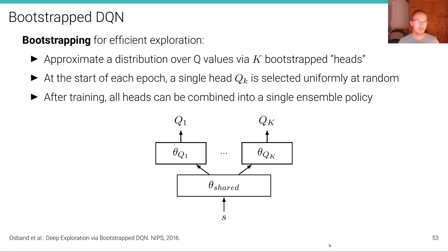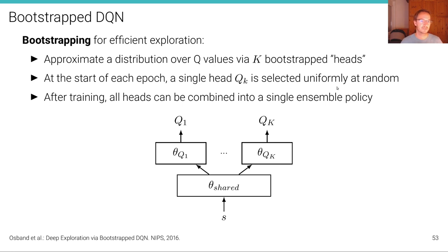Another technique is Bootstrapped DQN, used for efficient exploration. The idea is to approximate a distribution over Q-values via K bootstrapped heads — a network with a shared backbone and K heads each predicting a Q-value. At the start of each episode, a single head is selected uniformly at random. After training, all heads can be combined into a single ensemble policy that acts more robustly than a single Q-function.